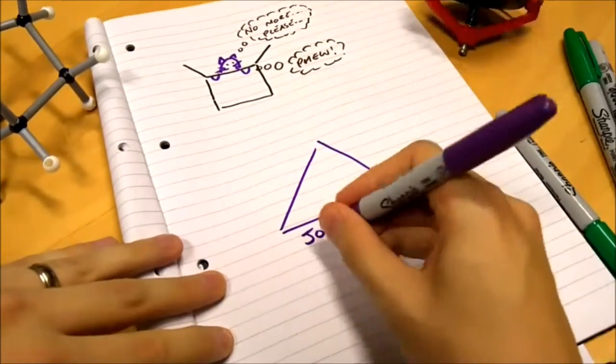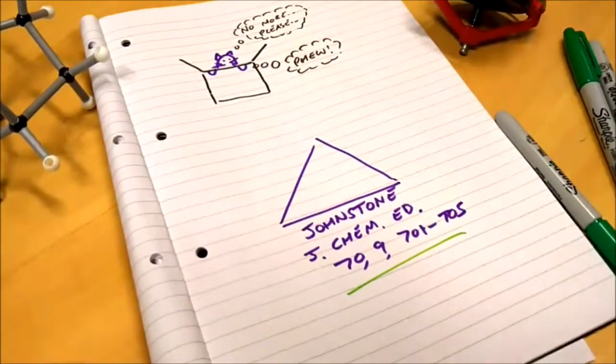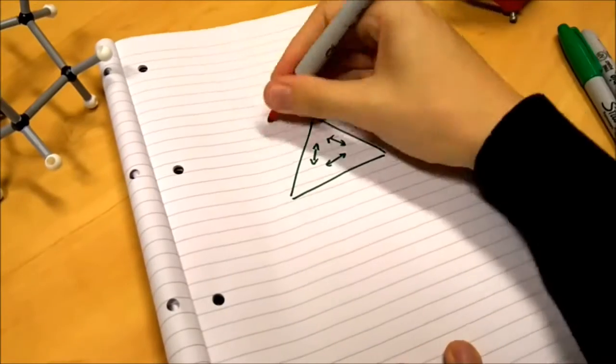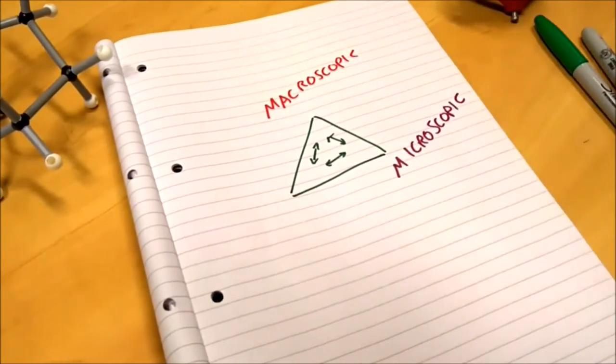This is a concept in chemistry known as Johnstone's triangle, although the name isn't terribly important—you can look that up in your own time. The first of these three ways is the macroscopic world, then we have the micro or sub-microscopic world, and we also have the symbolic world.